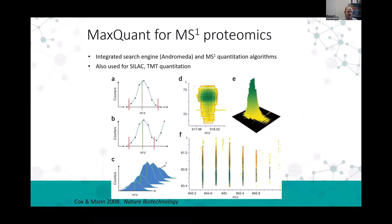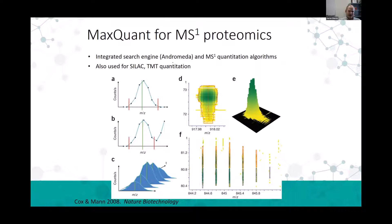We typically use MaxQuant for this. It was developed over a decade ago from the Max Planck Institute in Germany, and it came out of a lab that are experts in signal processing. They've applied a host of algorithms to really extract out the signal and provide a way of quantifying many of these peaks in a high-throughput fashion—because what we end up with is a very complex mixture of peptides and spectra. It takes some pretty sophisticated algorithms to process this. They've also extended this capability to be used for SILAC and also TMT quantitation.